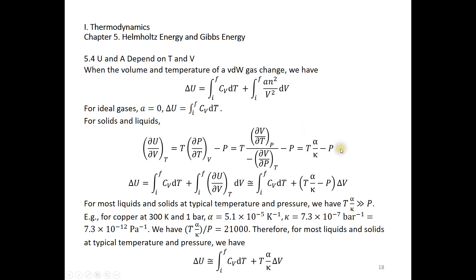This equation δU/δV = T·α/κ - P holds for all substances including gases, liquids, and solids. It is particularly convenient for liquids and solids because α and κ are constants you can look up and plug in. To compute ΔU, integrate C_V dT plus the integral of (T·α/κ - P) dV. Knowing the temperature, pressure, volume change, and values of α and κ allows direct calculation of ΔU.